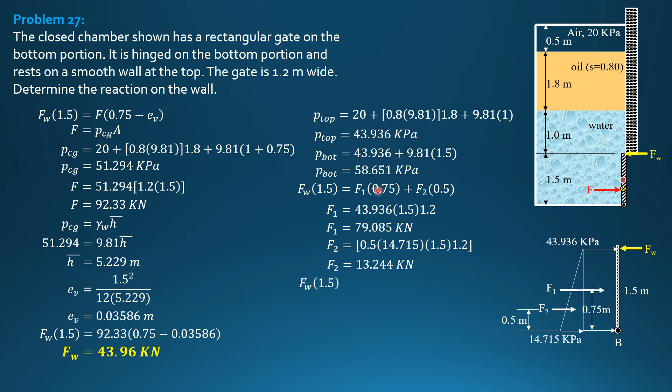And finally, substitute here. FW times 1.5 equals 79.085 times 0.75 plus 13.244 times 0.5. Of course, expect the same answer. So FW is 43.96 kilonewtons.